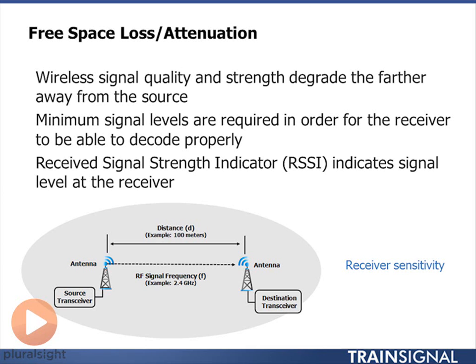Received signal strength is what is arriving at the antenna. You need to make sure that you have achieved the receiver sensitivity specific for your device, and different devices have different receiver sensitivities. When you're planning out your network you need to accommodate your weakest device.